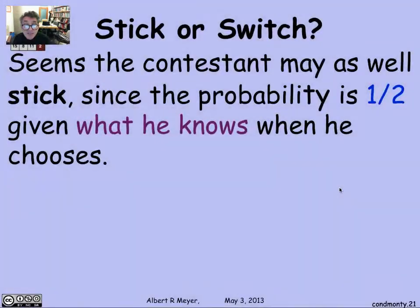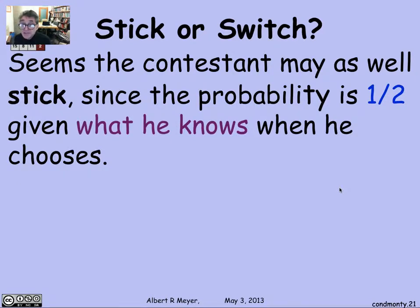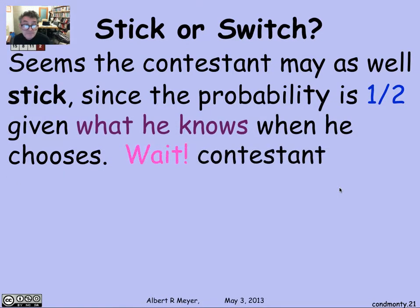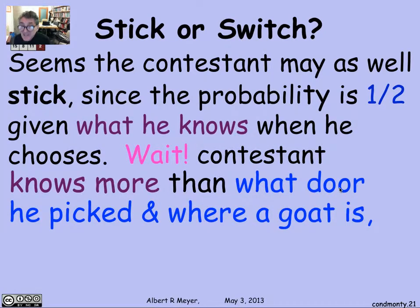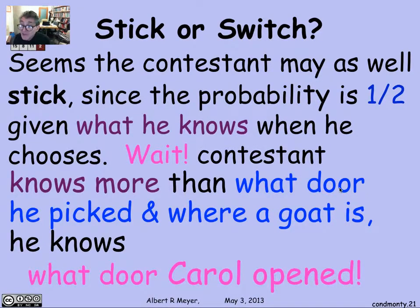That's confusing. It seems as though the contestant may as well stick, because at the point they have to decide whether to stick or switch — seeing where the goat is and knowing what door they picked — it's 50/50. The probability that the prize is at door 1 is one half, so it really doesn't matter whether they stay or switch to the unopened door. But wait — that's not right, because the contestant not only knows what door they picked and that there's a goat behind a given door, but they know that Carol specifically opened that door.